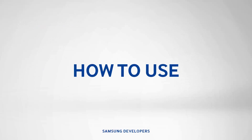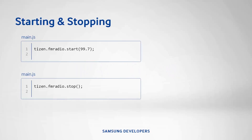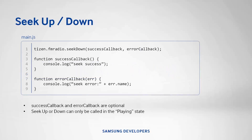Time to learn the basics of using the radio API before we build our app. Starting the radio is simple — all we have to call is tizen.fmradio.start and pass a double value for the frequency we'd like to tune into, like 99.7. Stopping is just as easy by calling tizen.fmradio.stop. To seek up or down, call tizen.fmradio.seekup or seekdown. Optionally, you can add functions for the success and error callbacks to handle any errors.